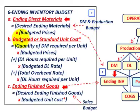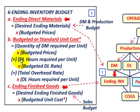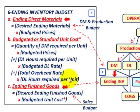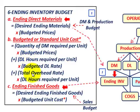Next, we determine the budgeted or standard unit cost, which equals the quantity of direct material required per unit times the budgeted prices, plus direct labor hours required per unit times the budgeted direct labor hour rate, plus the total overhead rate times the direct labor hours required per unit. You add direct materials, direct labor, and overhead together to get the standard cost per unit.